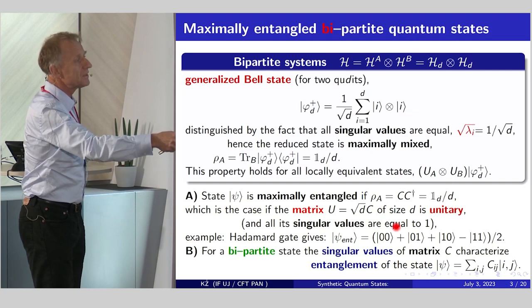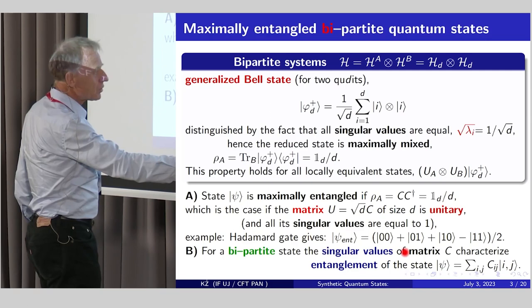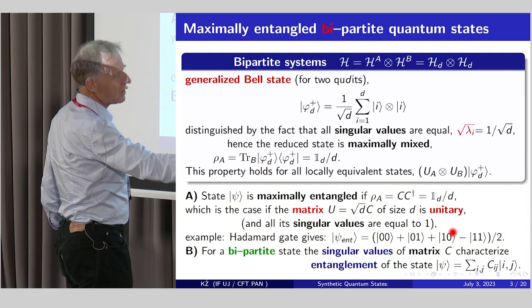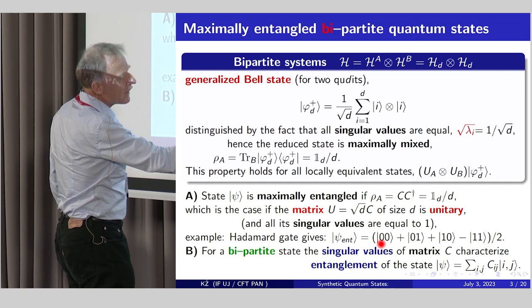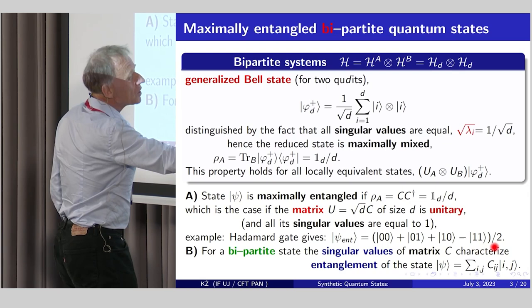Then this Bell-like, maximally entangled state has d terms, and it's maximally entangled because all those singular values lambda are equal. In a sense, partial trace is maximally mixed, so partial trace CC dagger is maximally mixed, 1 over d, so this matrix C is unitary up to the scale. For instance, if you take such a state, by two qubit state 00, 01, 10, minus 11, it's maybe not so simple to see that indeed is equivalent to the Bell state. To show this, it's enough to notice that this matrix is just a Hadamard matrix, which is unitary.